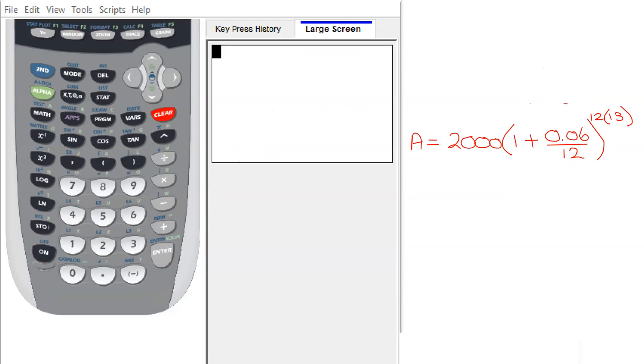So now we're ready to put our expression in the calculator. I had to go to a different screen, and I can't show the whole calculator. So here's the keyboard, and here is the screen. So I need to put in 2,000, open parenthesis, 1 plus 0.06, divided by 12.